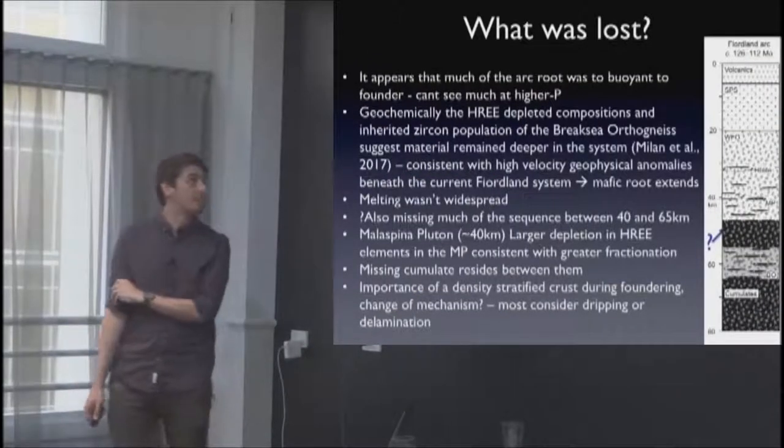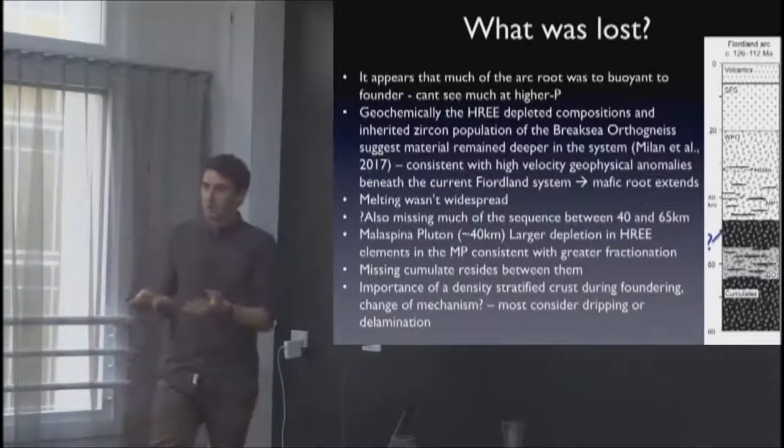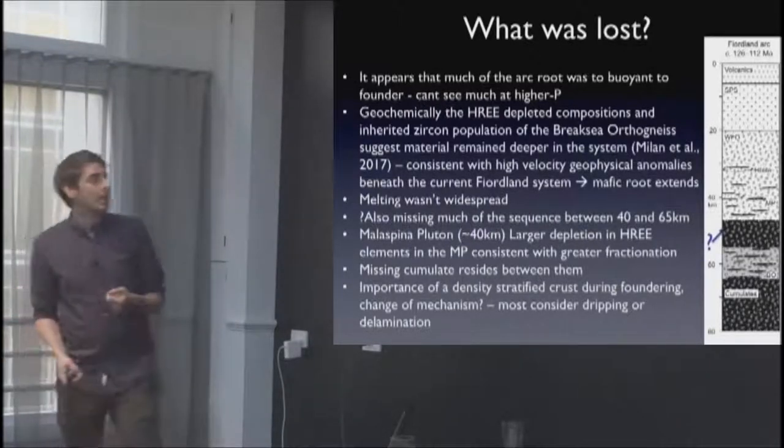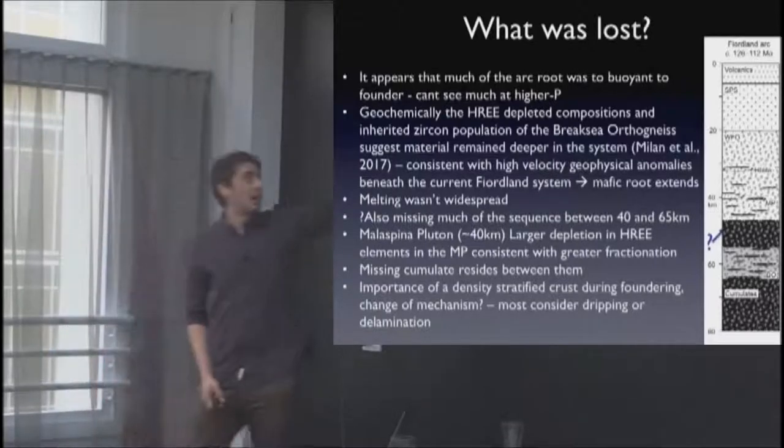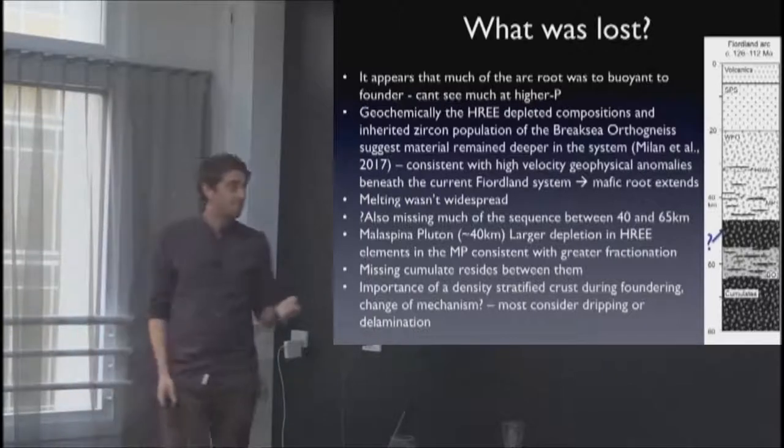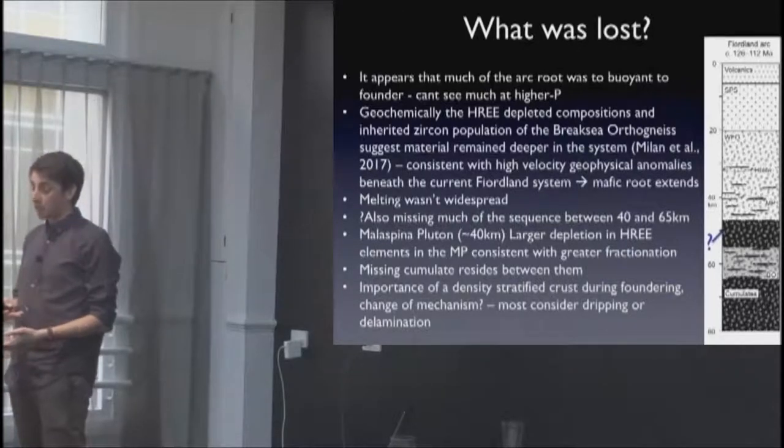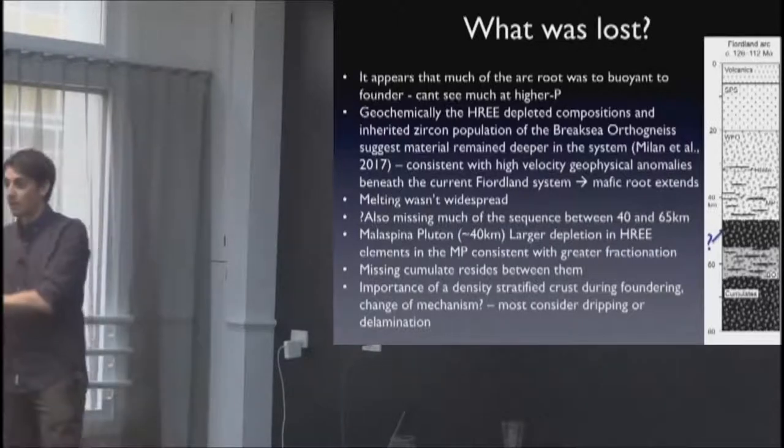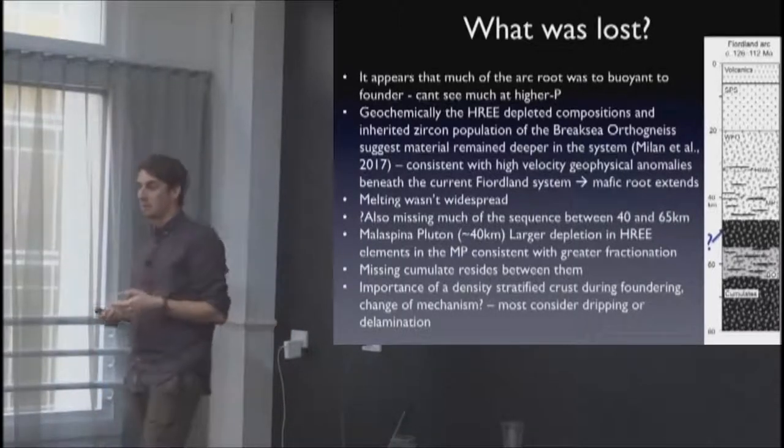If we go back to fjordland, it seems like much of the material we see is obviously too buoyant to founder. It's preserved back at the surface. But what can we see at higher pressure? Geochemically in the Break Sea orthogneiss we preserve evidence to suggest that there was material beneath it. It's heavy rare earth depleted, consistent with garnet being involved in its source. It also has an inherited zircon population, so it involves some sort of crustal contamination at depths below what we see. We also see geophysical anomalies that could suggest that that mafic root actually extends beneath the Break Sea orthogneiss. So it could still be preserved. It doesn't seem like melting was particularly persistent throughout the orthogneiss. It is quite dry. A lot of the melt structures that are observed appear to be primary igneous features.